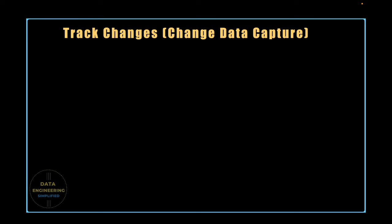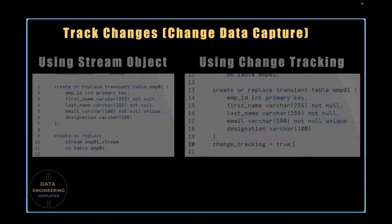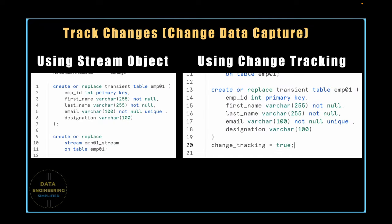To track the changes in a table, Snowflake has two built-in features. The first one, known as the stream object, is pretty popular. The second one, which is a bit lesser known, is called change tracking properties. We have already taken a closer look at these features in earlier videos, but it's time to explore how they each serve different purposes and understand their limitations.